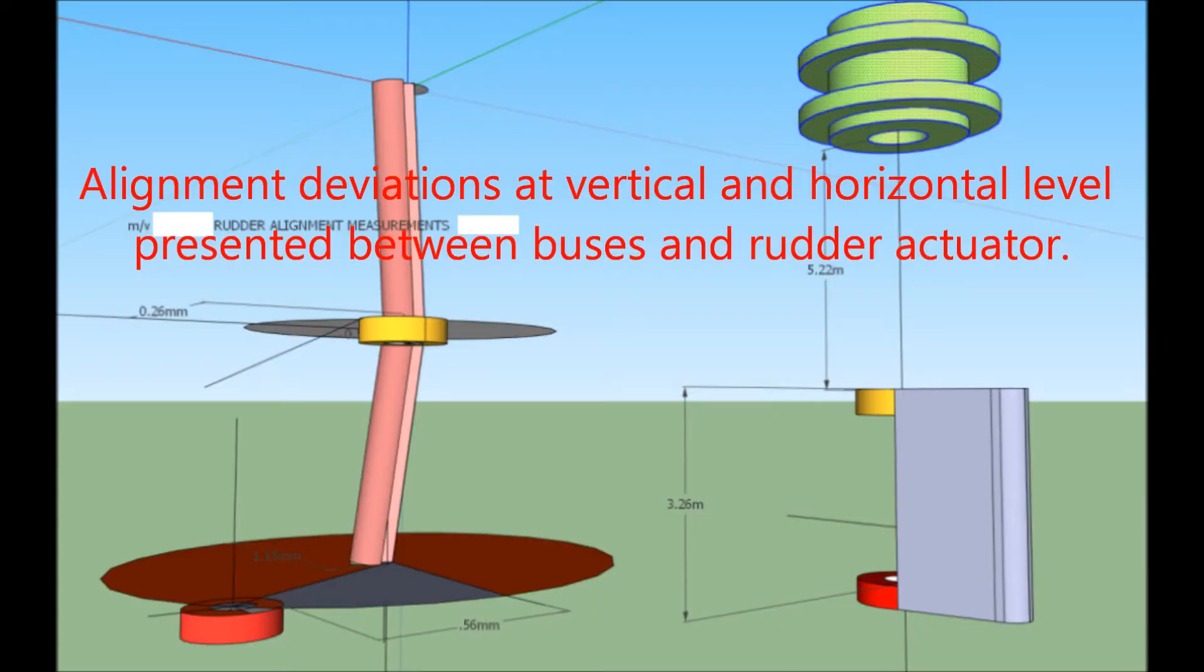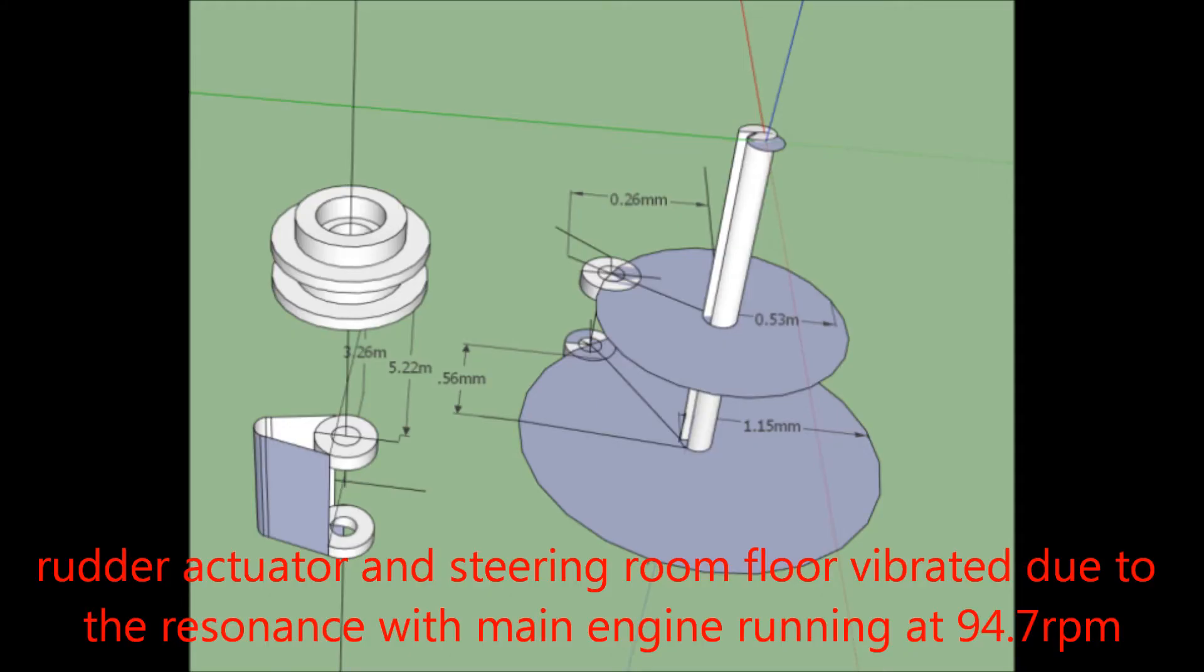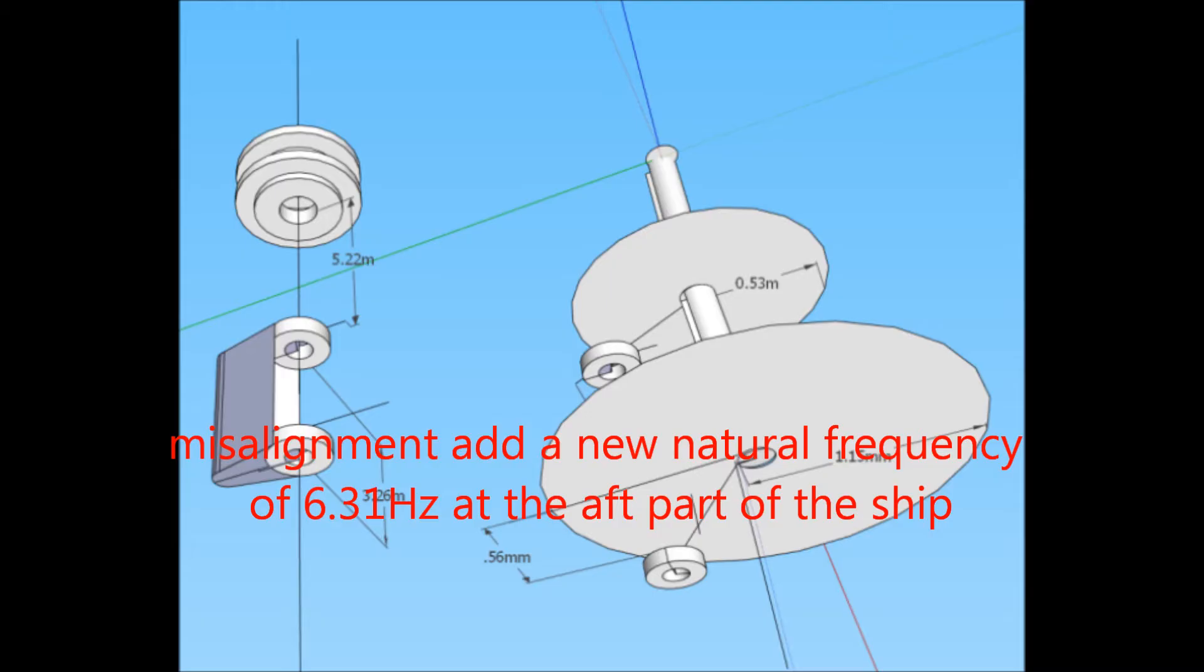Misalignment deviations at vertical and horizontal level presented between bosses and rudder actuator. Misalignment adds a new natural frequency of 6.31 Hz at the aft part of the ship.